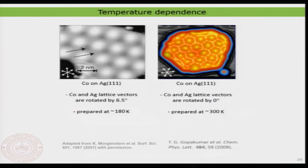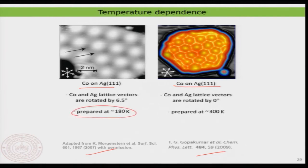Let me get back to the cobalt on silver example. I showed you two examples of cobalt on silver 111 when we were discussing the moiré pattern. You can find details in two papers — I encourage you to read them. The major point is that the two different structures are prepared at two different temperatures, which is the interesting aspect.